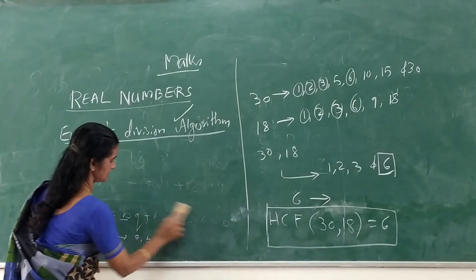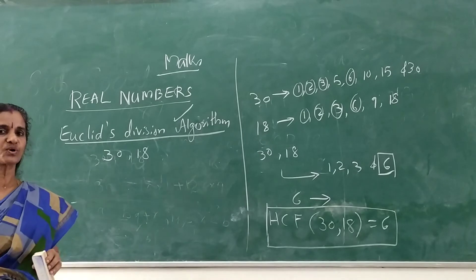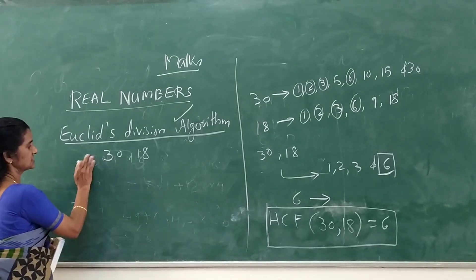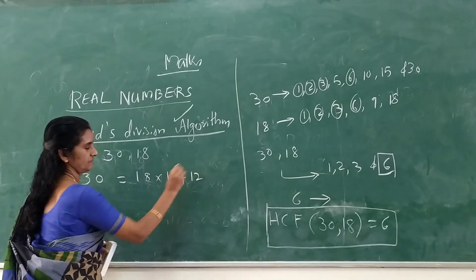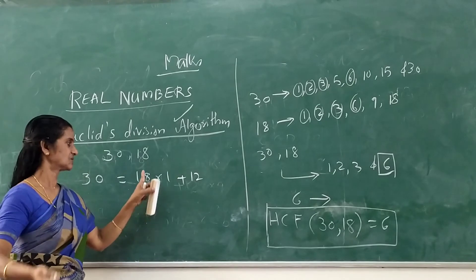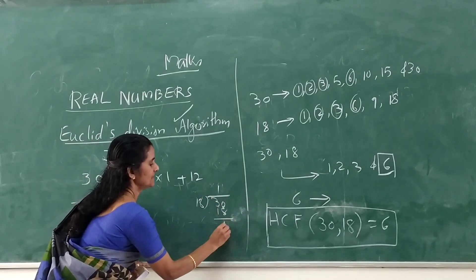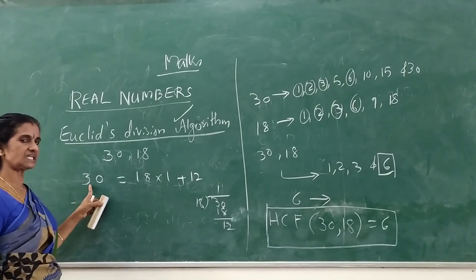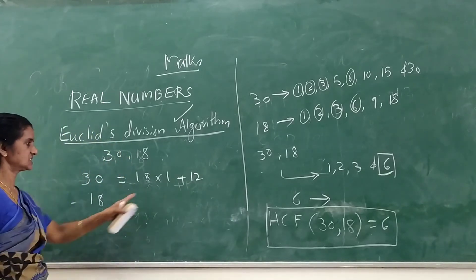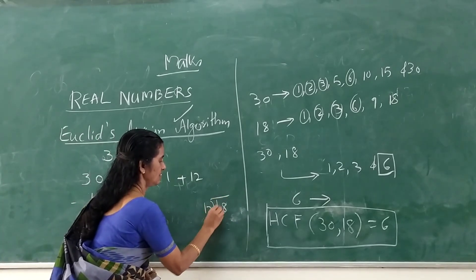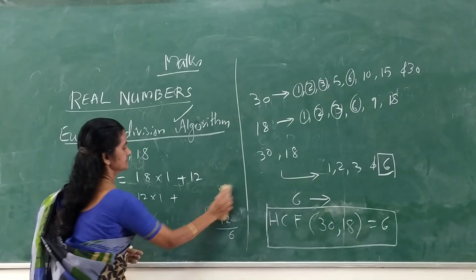Now let us see the step-by-step procedure for finding the HCF of the given numbers 30 and 18 using Euclid's Division Algorithm. Using Euclid's Division Lemma, we can express 30 as 30 = 18×1 + 12. So when we divide 30 by 18, we get quotient 1 and remainder 12. Now let us take 18 as the dividend and 12 as the divisor. Then 18 divided by 12 gives 18 = 12×1 + 6.